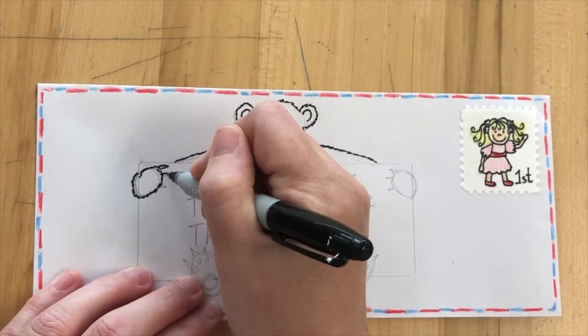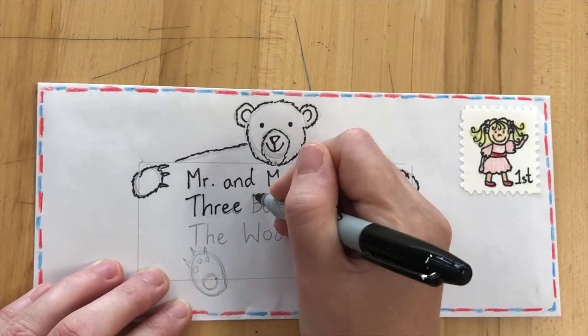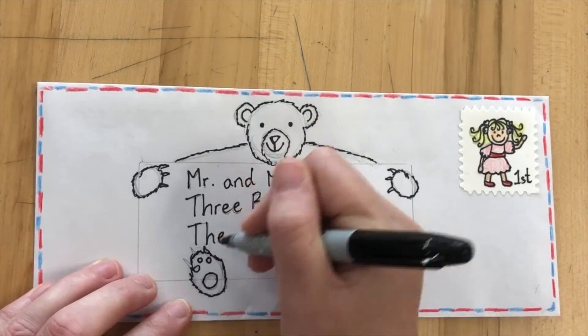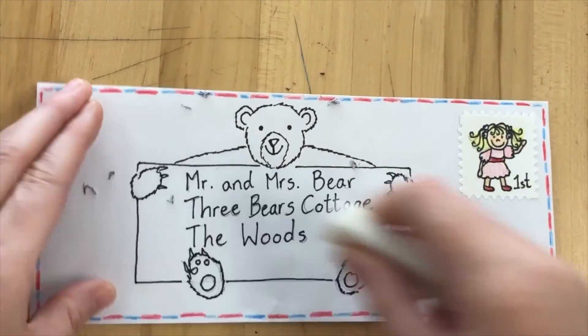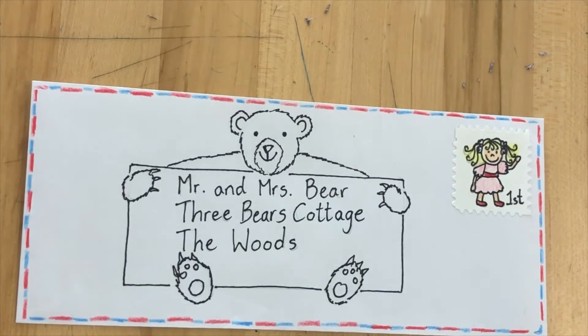Once you're happy with your pencil lines you're then going to go over the top with a black fineliner pen, maybe a sharpie. Try if you can to do some texture and erase your pencil lines once you've finished the pen outline.